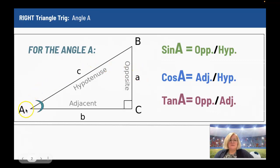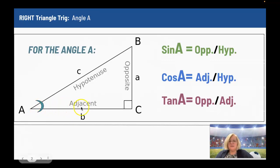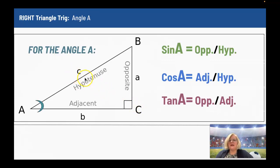For angle A, the opposite side goes across — it doesn't touch angle A. So that is little a, side a. The adjacent side is the side that's next to it that's not the hypotenuse, so side B is my adjacent side. Little b is across from angle B. And then angle C is my 90-degree angle. Little c going across is my hypotenuse.